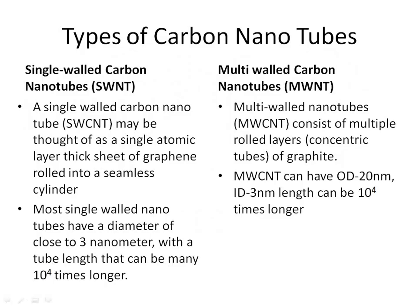Types of carbon nanotubes. Single-walled carbon nanotubes (SWNT): a single-walled carbon nanotube may be thought of as a single atomic layer thick sheet of graphene rolled into a seamless cylinder. Most SWCNTs have a diameter close to 3 nanometers, with a tube length many 10^4 times longer. Multi-walled carbon nanotubes (MWCNT) consist of multiple rolled layers — concentric tubes — of graphite. MWCNTs can have an outer diameter of 20 nm, inner diameter of 3 nm, and length 10^4 times longer.